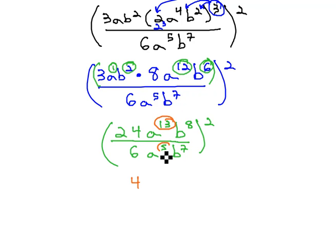13 in the numerator, with 5 a's dividing out, leaves us with a to the 8th. Similarly, with the b's, b to the 8th, subtract out 7, leaves us with b to the 1st, or just b. The entire thing is still squared.